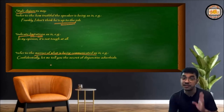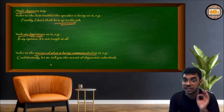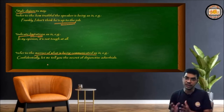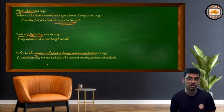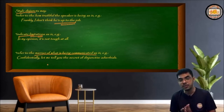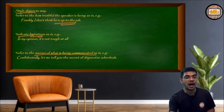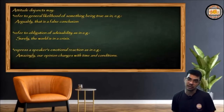Style disjuncts may also refer to the manner of what is being communicated. For example: 'Confidentially, let me tell you the secret of disjunctive adverbials.' So with style disjuncts, you may produce sentences that indicate manner of communication.